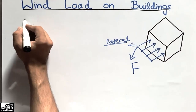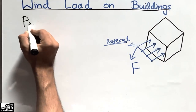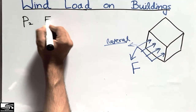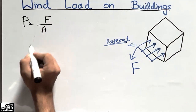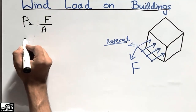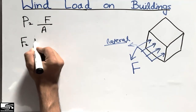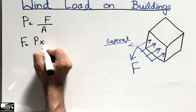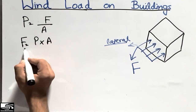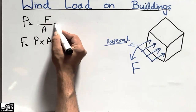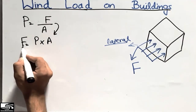To start the calculation for wind load on the building, as we know, the pressure is equal to the force per unit area, and the force is equal to the pressure multiplied by area. This can be derived from the above formula.